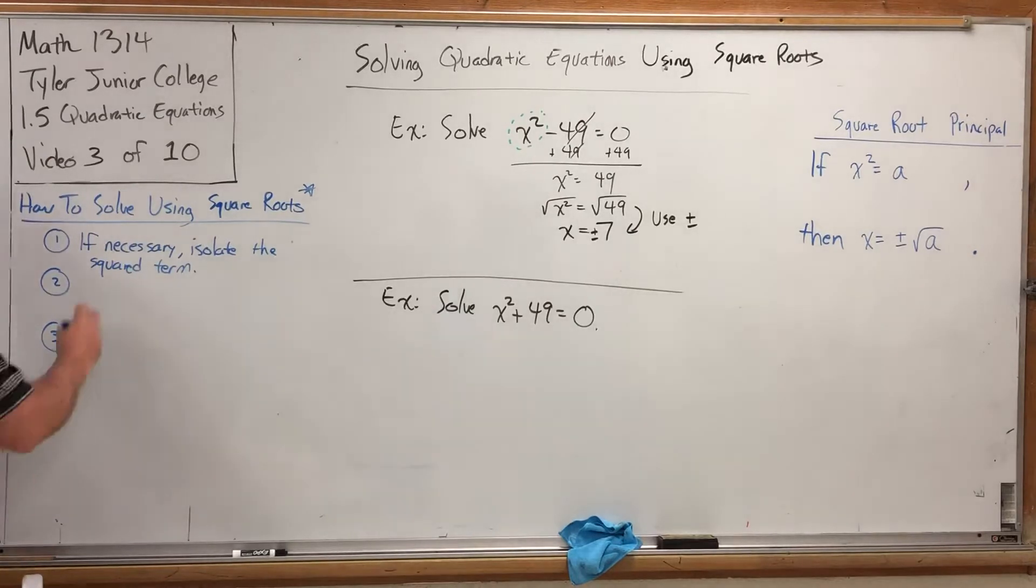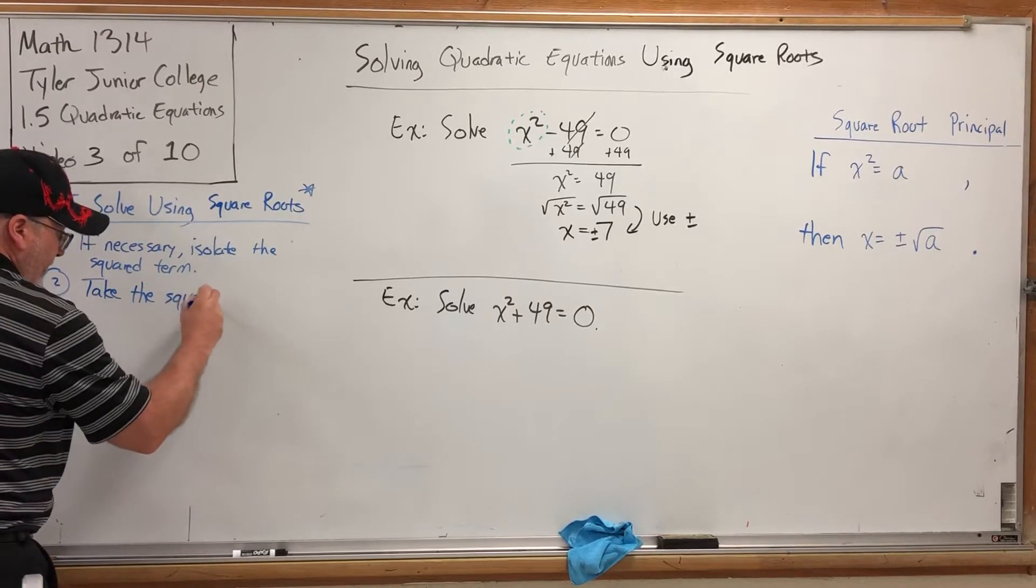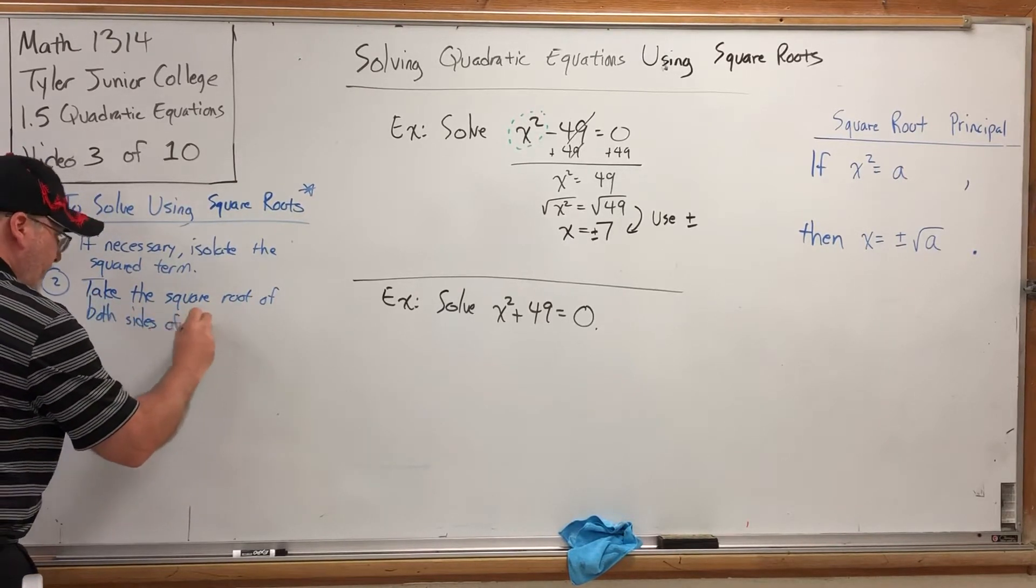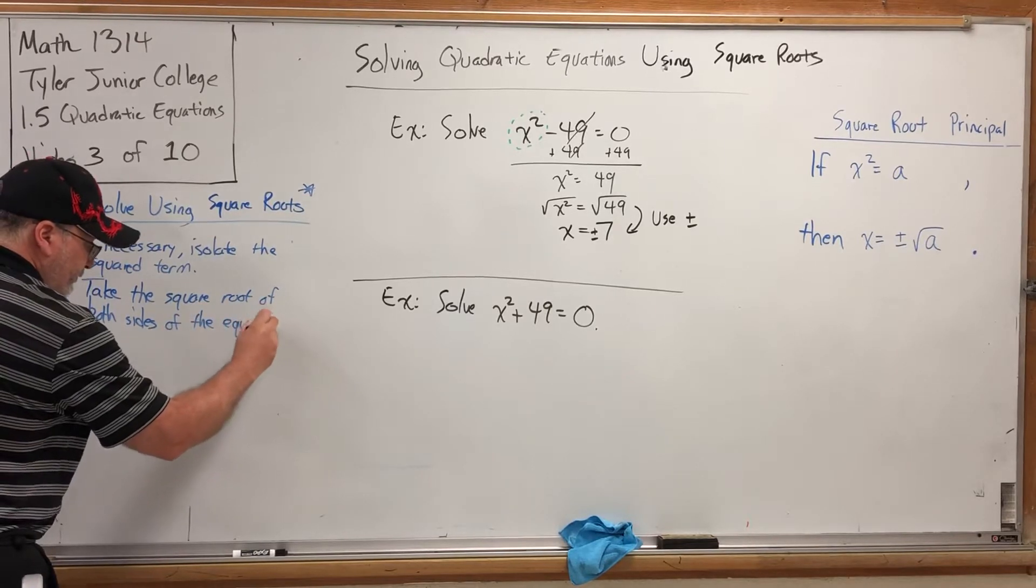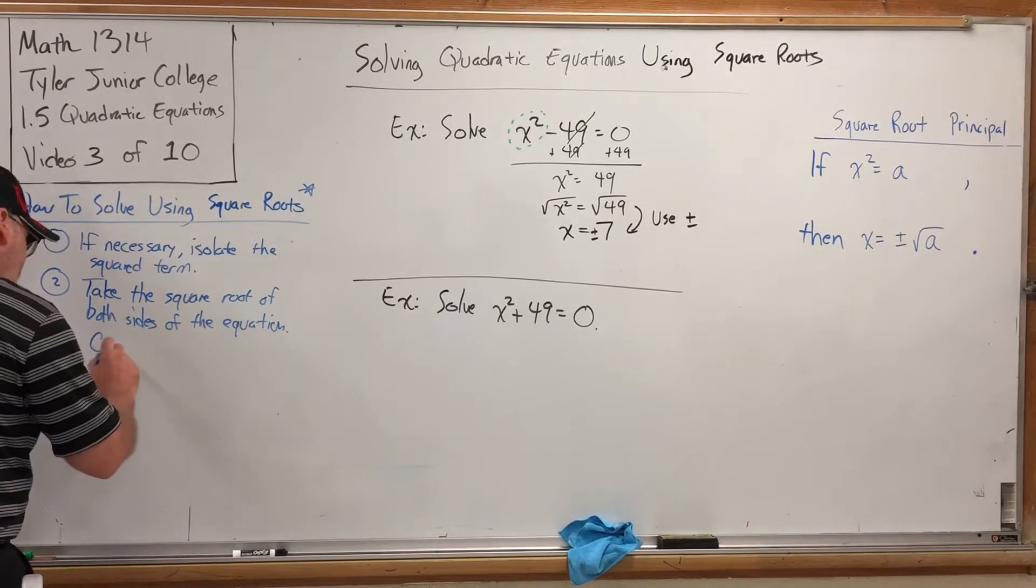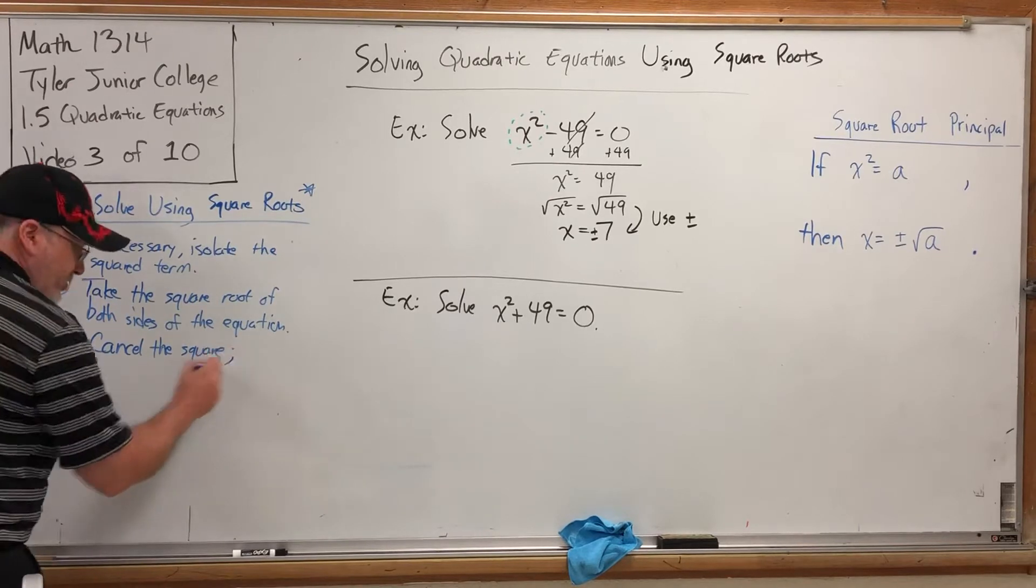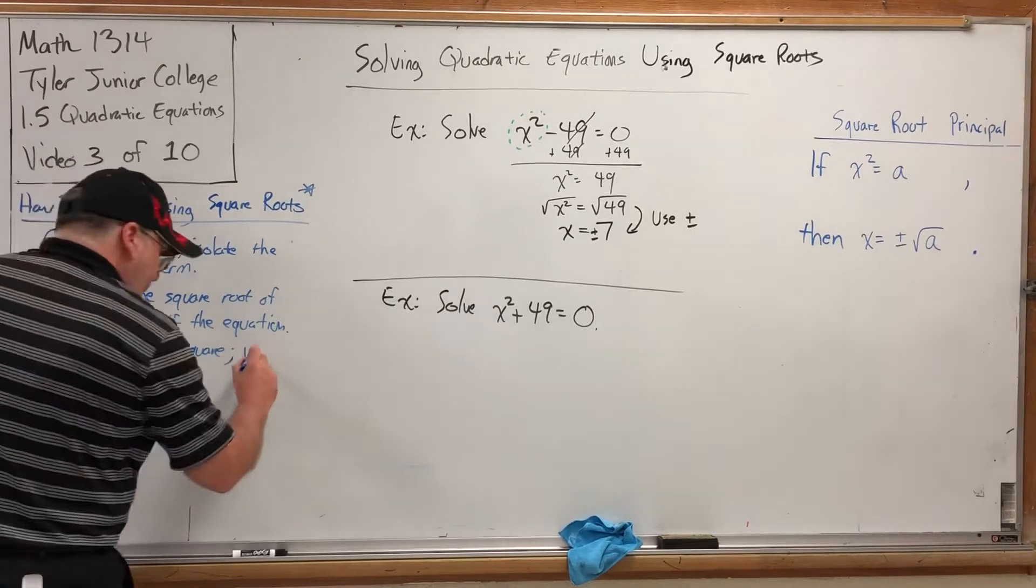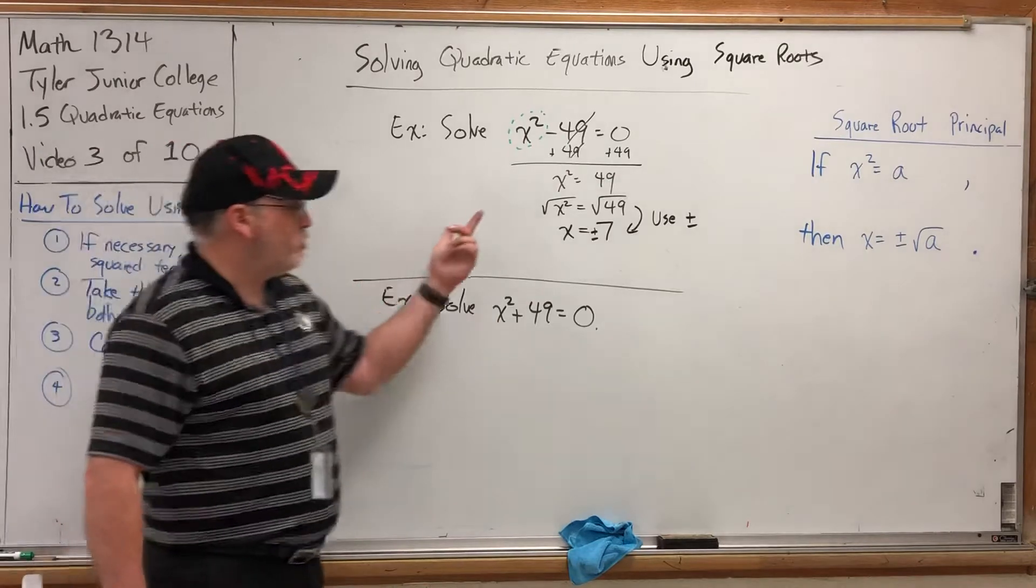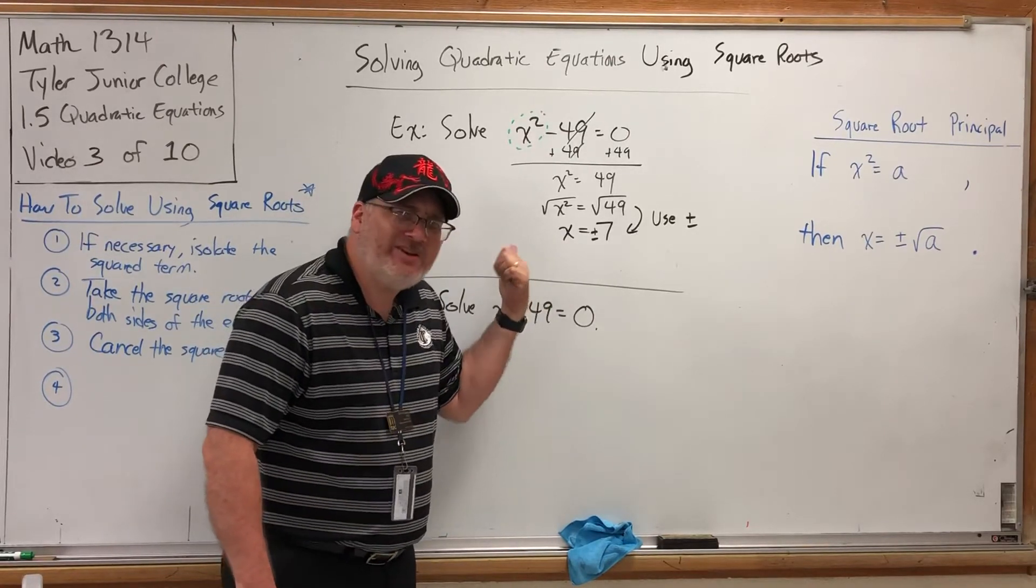Now, once we isolated, then we take the square root of both sides of the equation. Now, as a consequence of that, two things happened. Number one, which is step three, cancel the square. Actually, step three has two parts to it, so I'm going to put a semicolon. Cancel the square; use plus minus. And typically, you use plus minus on the other side. So, whichever side the square was on, you can use plus minus on the other side. It's not wrong to use it on the left, but I'm trying to isolate the x, and sticking the plus minus on it is counterproductive.